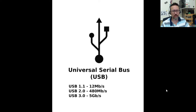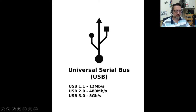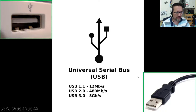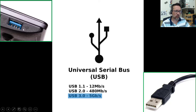The USB — Universal Serial Bus — connection has been around for a long time and it was revolutionary. It enabled very fast speeds and allowed us to connect almost any device to our computer. USB 1.1 transfers at 12 megabits per second; USB 2 at 480 megabits per second; and USB 3, the current standard, at 5 gigabits per second. USB 3 is color-coded blue so you can identify it easily.